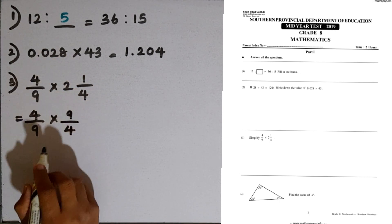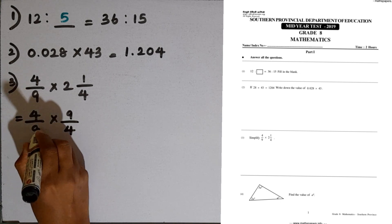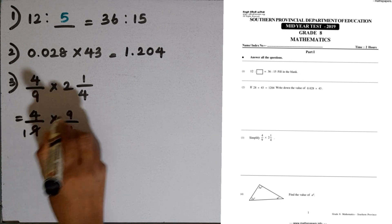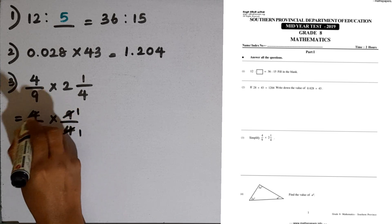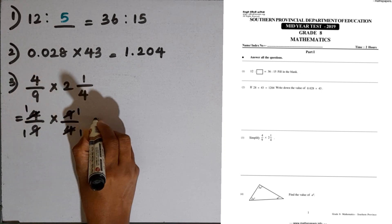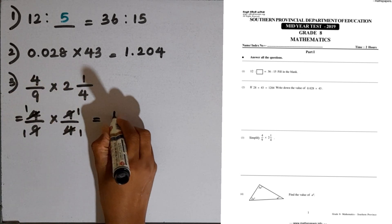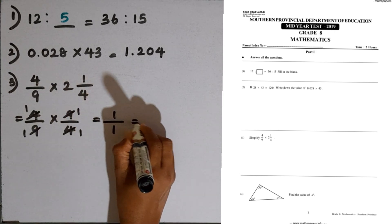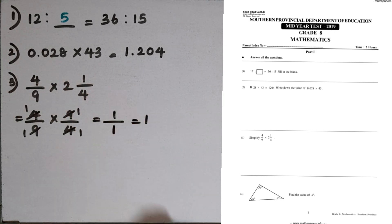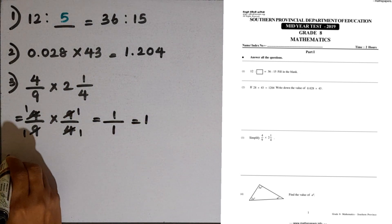Then we can simplify the common factors. The result simplifies to 1 over 1, which equals 1.